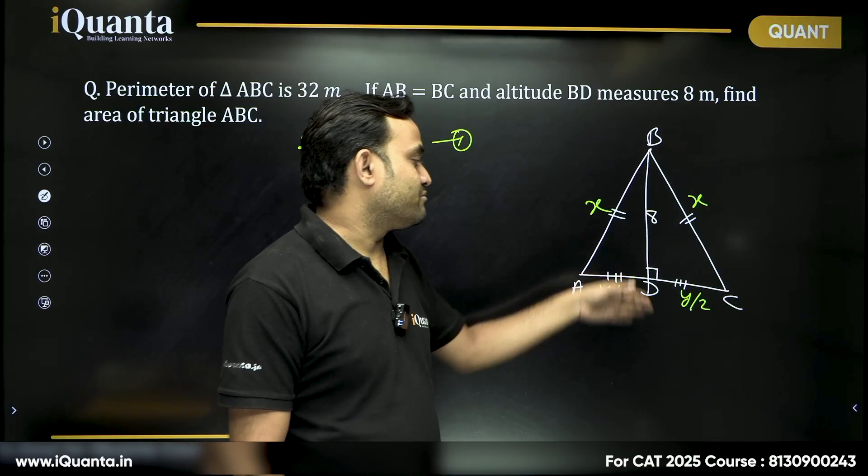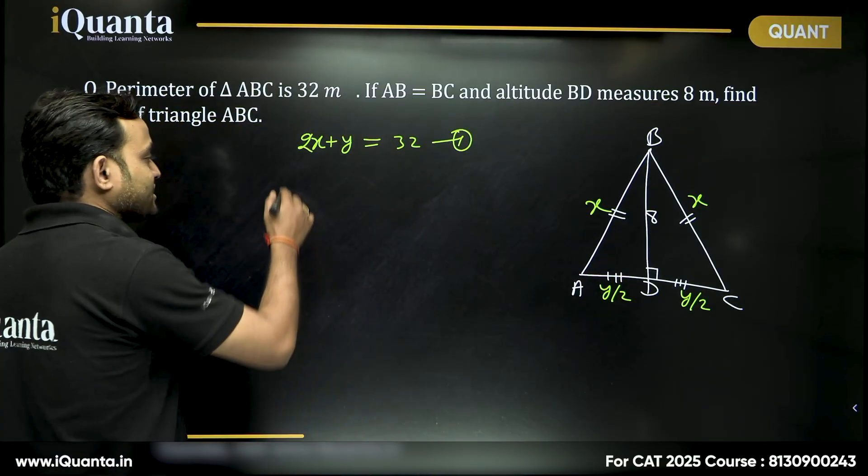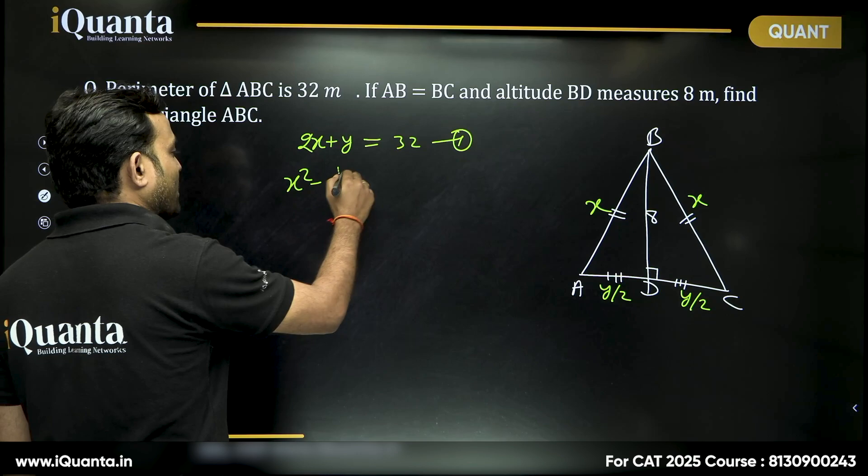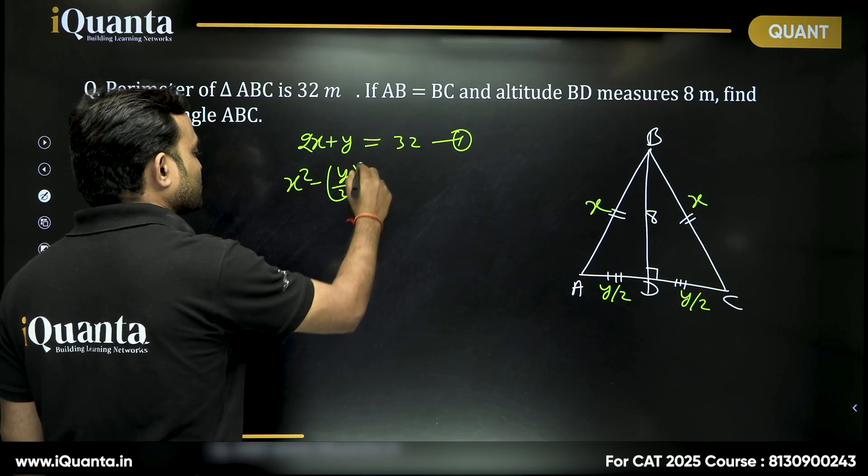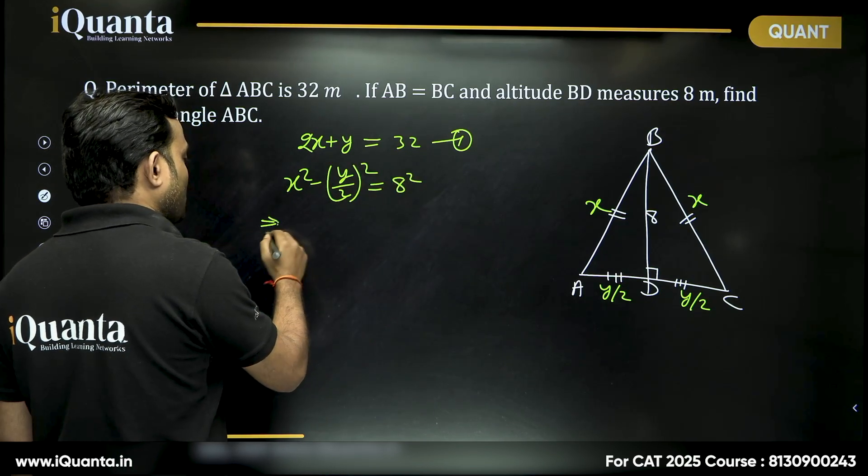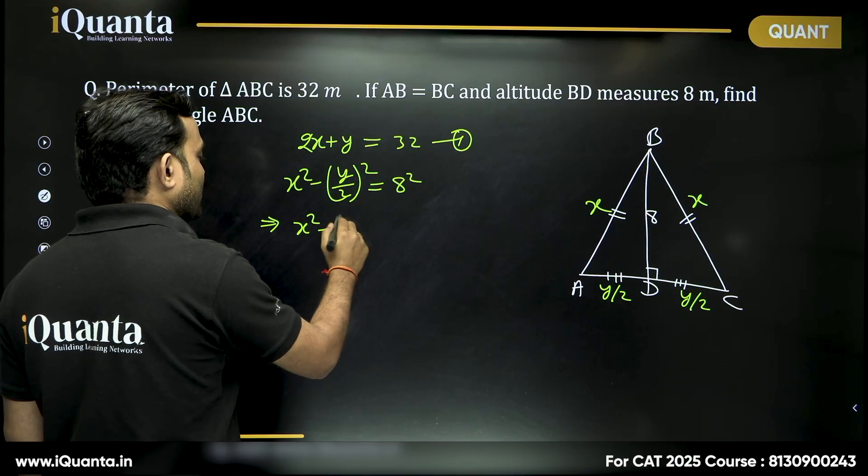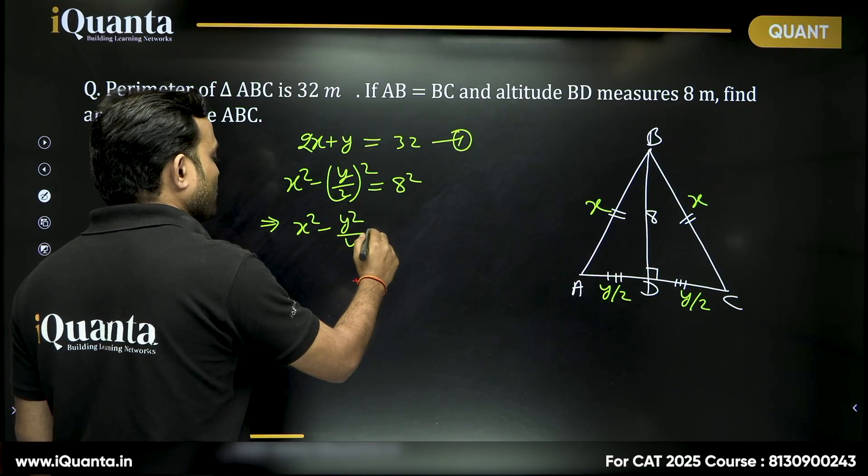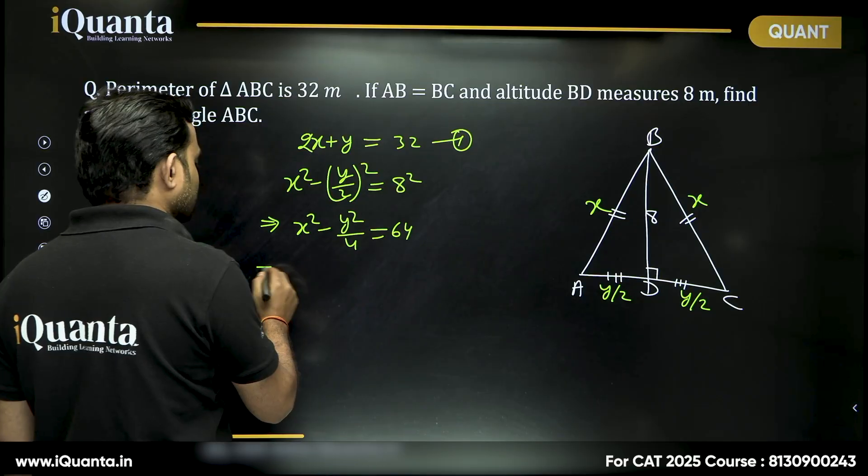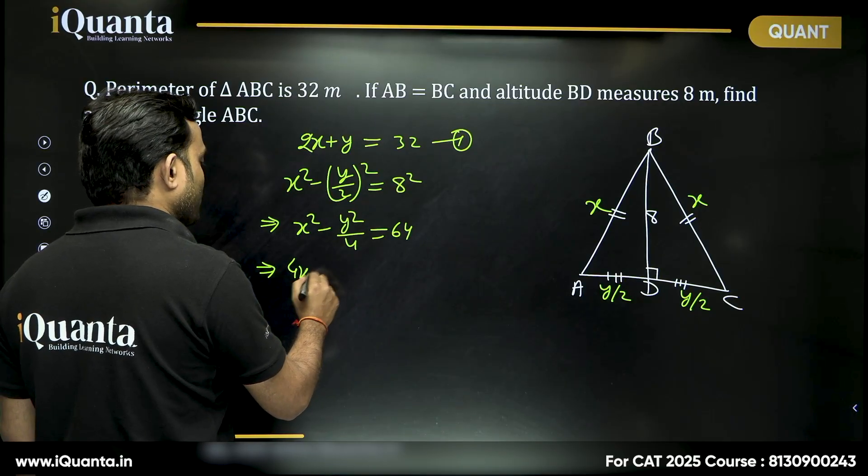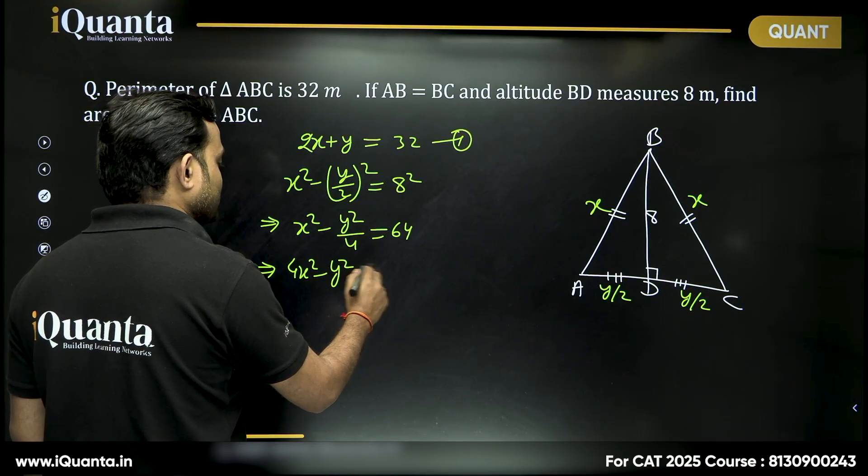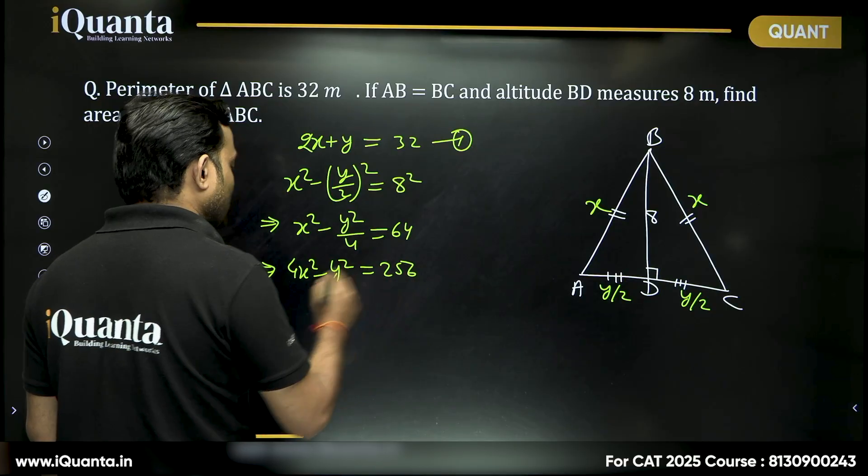X square minus Y by 2 whole square will be 8 square. X square minus Y by 2 square is equal to 8 square or we can say X square minus Y square will be equal to 64 or 4X square minus Y square will be equal to 256.